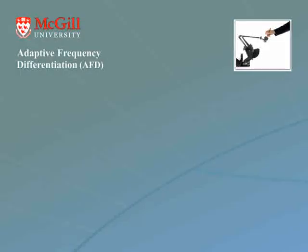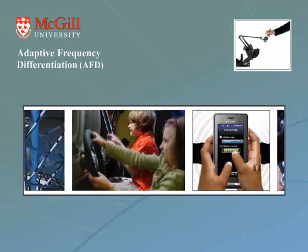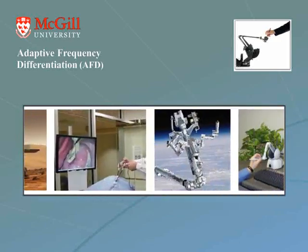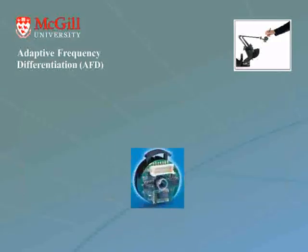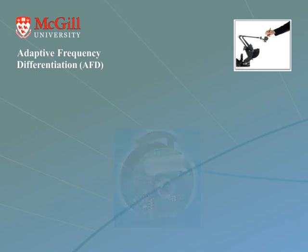Haptic technology is increasingly becoming popular in a wide range of applications. Optical encoders are commonly used for position measurement in haptic devices, and the velocity is usually determined by backward differentiation using the sampled position data. The reliability and speed of such numerical differentiation influences the quality and fidelity of the behavior displayed.